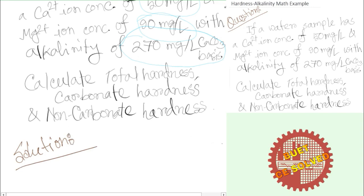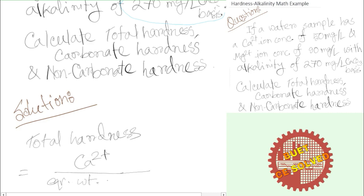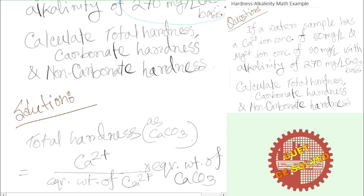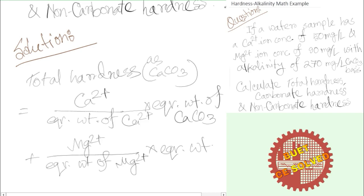We are going to convert calcium and magnesium ion concentrations into hardness as calcium carbonate. The formula for total hardness involves dividing the ion concentration by the equivalent weight of that ion and multiplying by the equivalent weight of calcium carbonate. This applies to both calcium and magnesium: magnesium concentration divided by equivalent weight of Mg²⁺, multiplied by equivalent weight of CaCO₃.